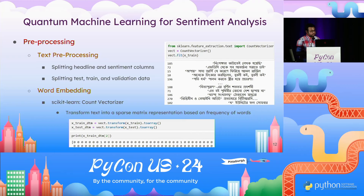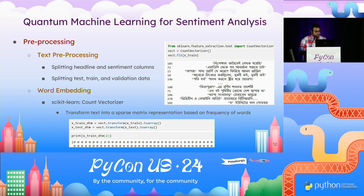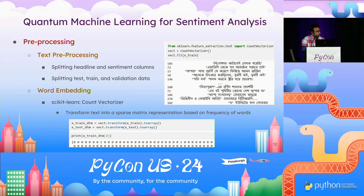Starting with preprocessing: we split the headline and sentiment columns, assigning label and data columns from our dataset — one example shown from the Bengali news portal. We also split into test, train, and validation datasets. For word embedding, we use scikit-learn's count vectorizer, which transforms text into a sparse matrix representation by laying out the vocabulary and matching each sentence to words, producing a one-hot sparse matrix — the standard method in natural language processing.